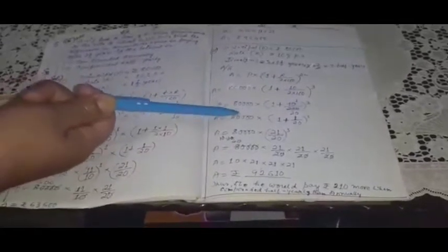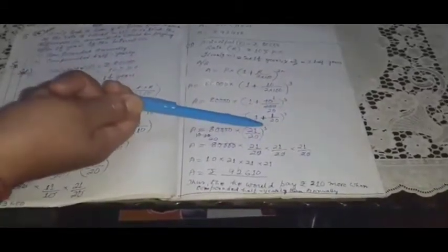Substituting values: Amount = 80,000 × (1 + 10/200)^3. Simplifying 10/200: Amount = 80,000 × (1 + 1/20)^3. Converting to improper fraction: (21/20)^3. So Amount = 80,000 × (21/20) × (21/20) × (21/20), written three times because of the power of 3.